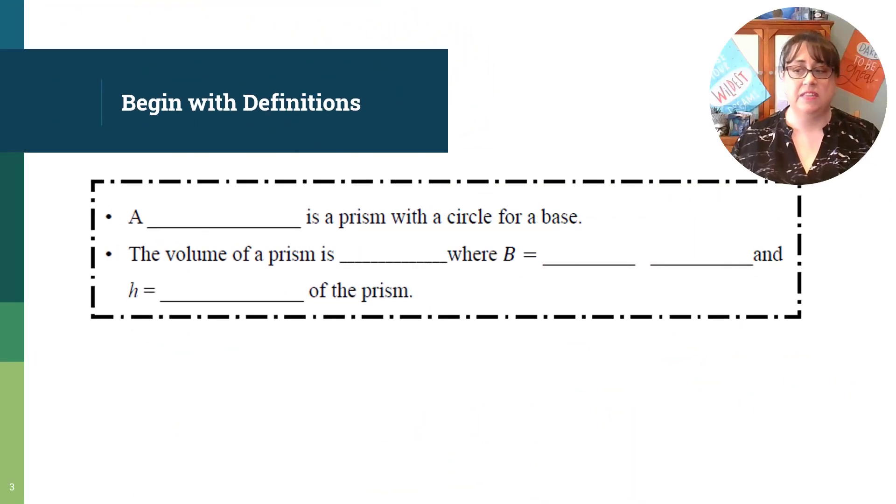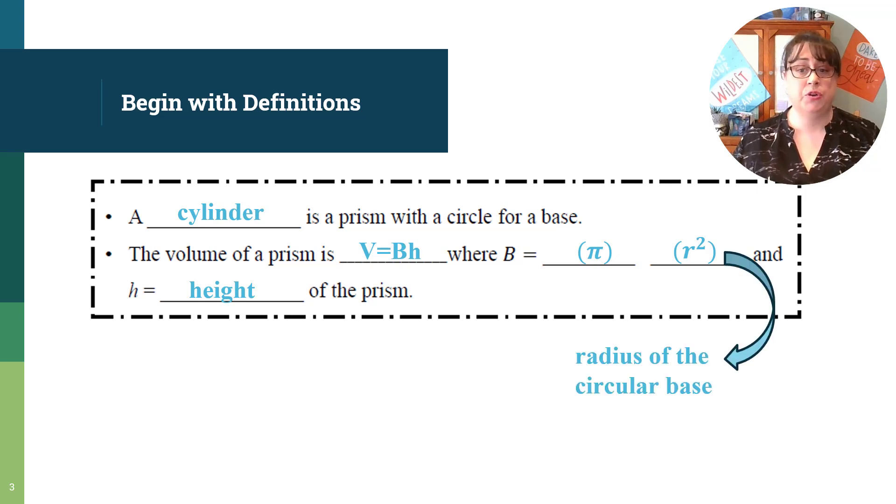Let's begin with some definitions. A cylinder is a prism with a circle for a base, and the volume of a prism is written as V equals capital BH, where capital B is the base area, which we're representing as B equals πr², and h is the height of the prism, and r is the radius of our circular base.